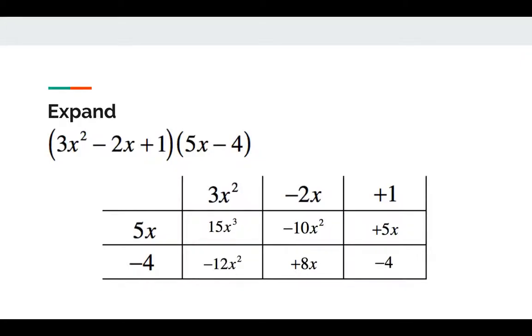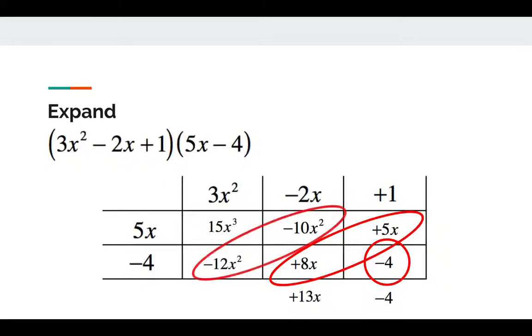After that, it's close to the end. The constant term would be -4. The term with x comes with these two, gives you +13x. The x² terms come with here, gives you -22x². Last but not least, the leading term should be 15x³ we should write here.